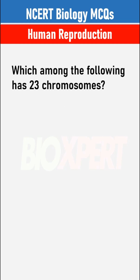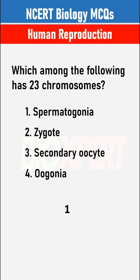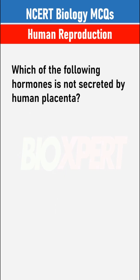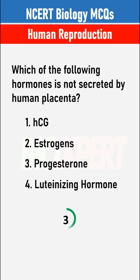Which among the following has 23 chromosomes? Secondary oocyte. Which of the following hormones is not secreted by the human placenta? Luteinizing hormone.